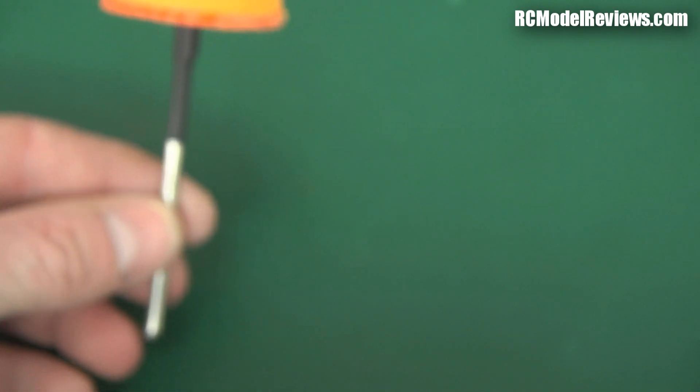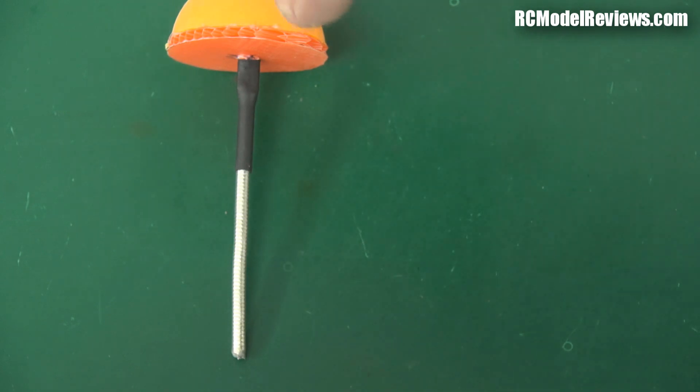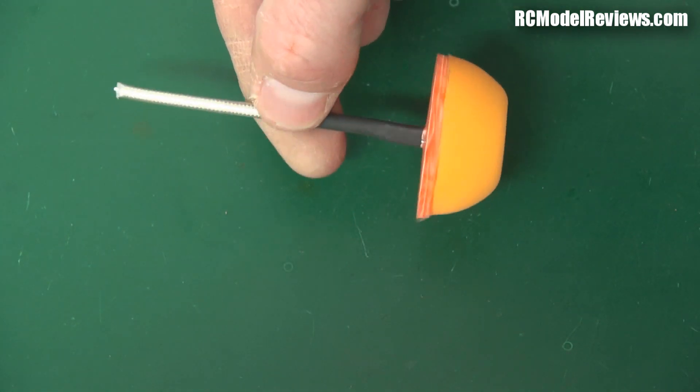All I have to do now is put my SMA or reverse SMA connector on that end, and I've got my protected cloverleaf antenna for my mini quad.